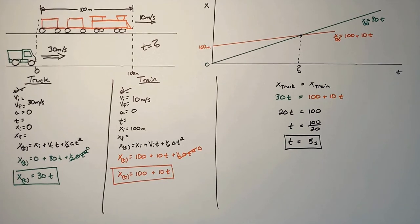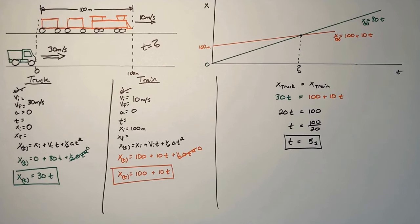The important takeaway from this problem is that when we wanted to find the time it took for the truck to pass the train, we needed to look at position versus time for each object, because displacements could not be set equal to each other. Ultimately, the truck had to travel 100 meters further than the train.